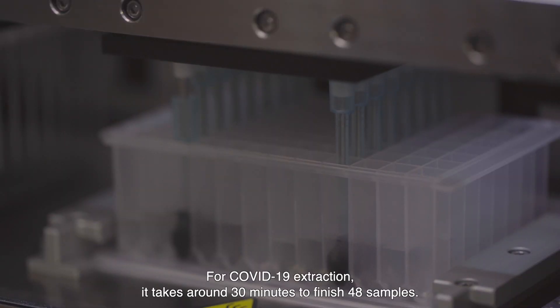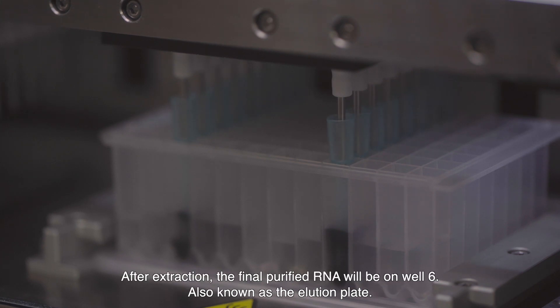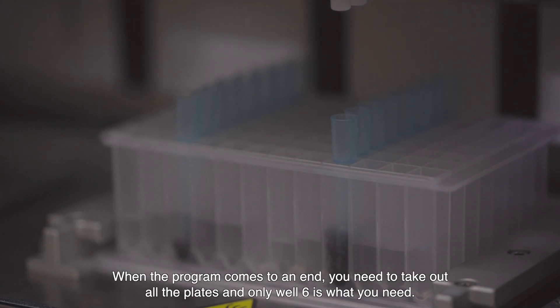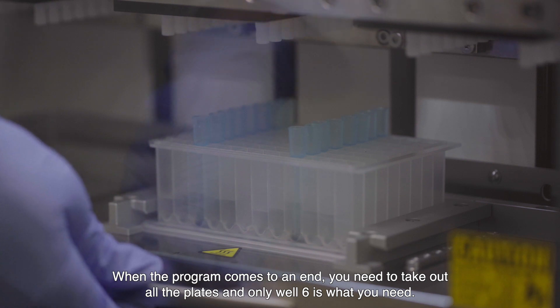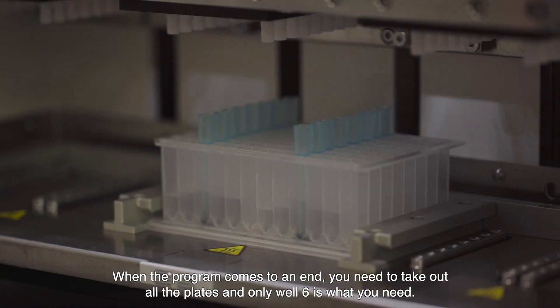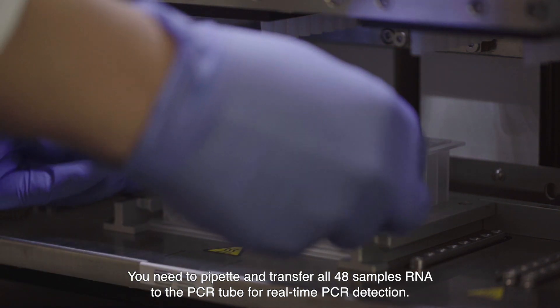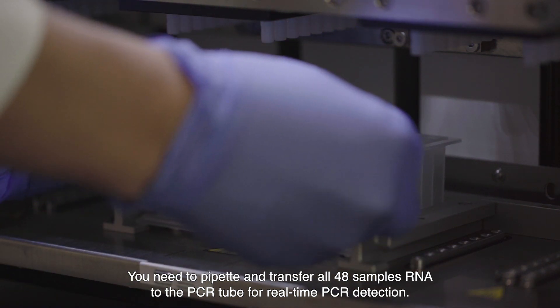For COVID-19 extraction, it takes around 30 minutes to finish 48 samples. After extraction, the final purified RNA will be on well 6, also known as the elution plate. When the program comes to an end, you need to take out all of the plates and only well 6 is what you need. You need to pipette and transfer all 48 samples RNA to the PCR tube for real-time PCR detection.